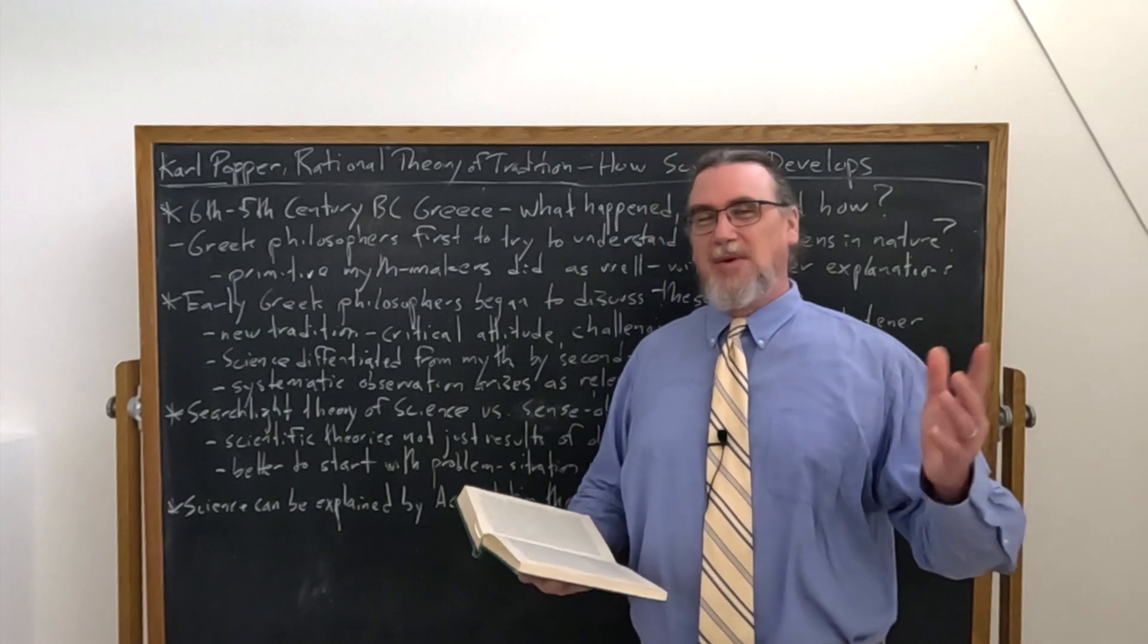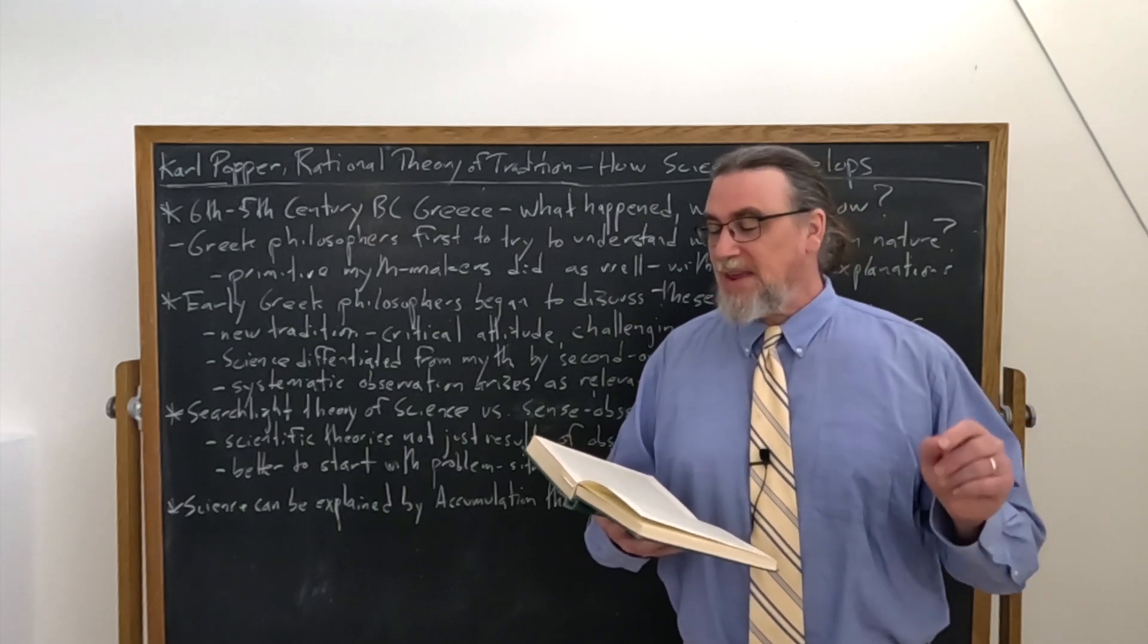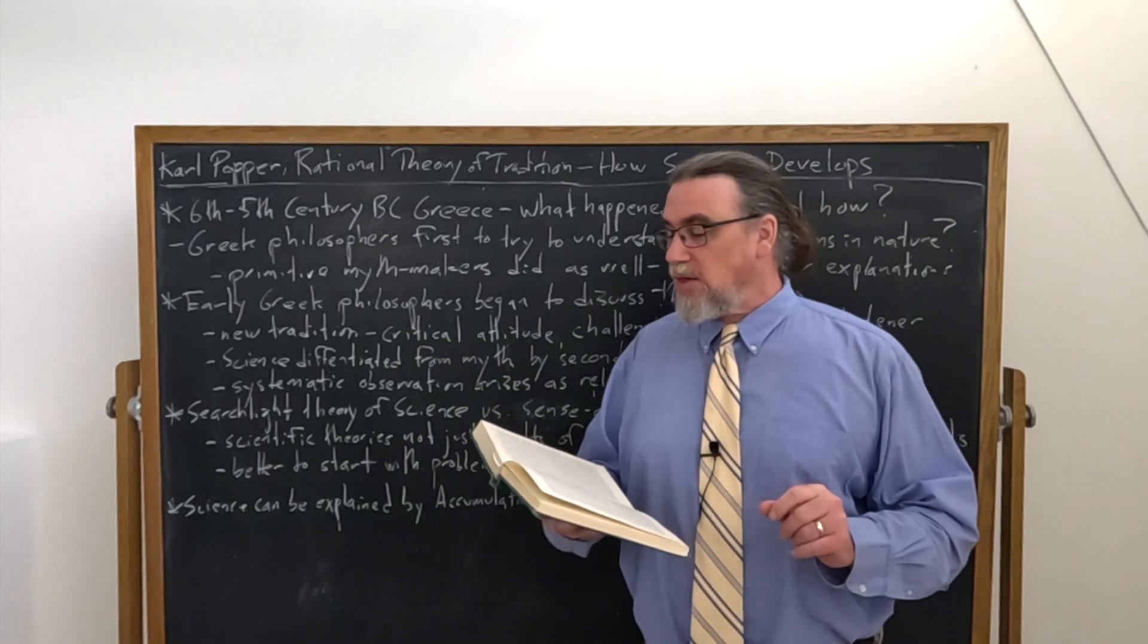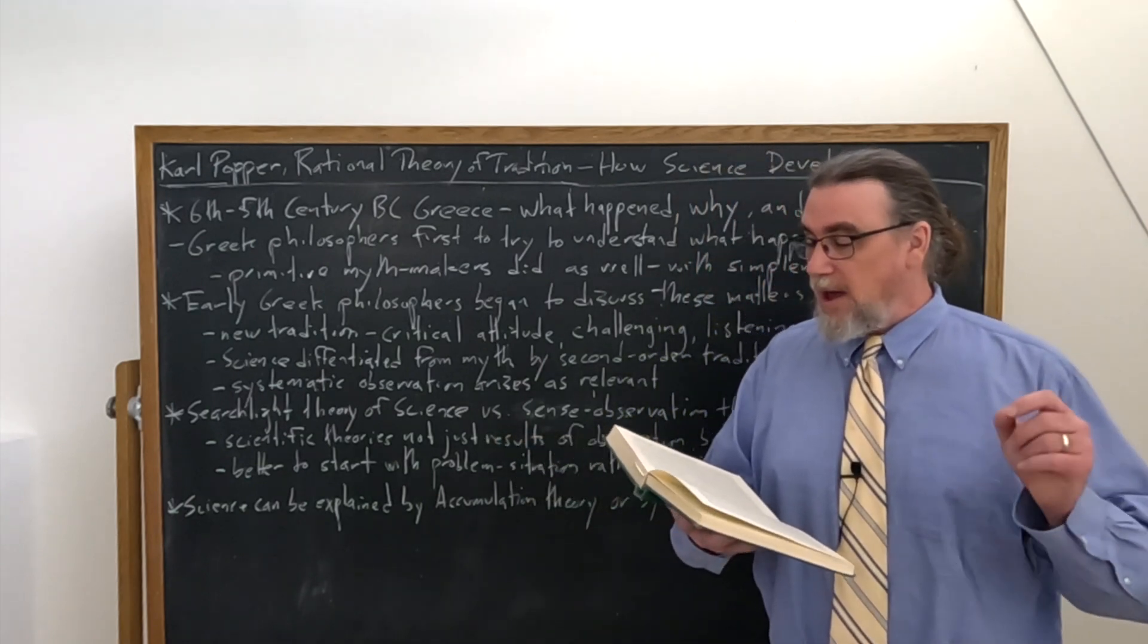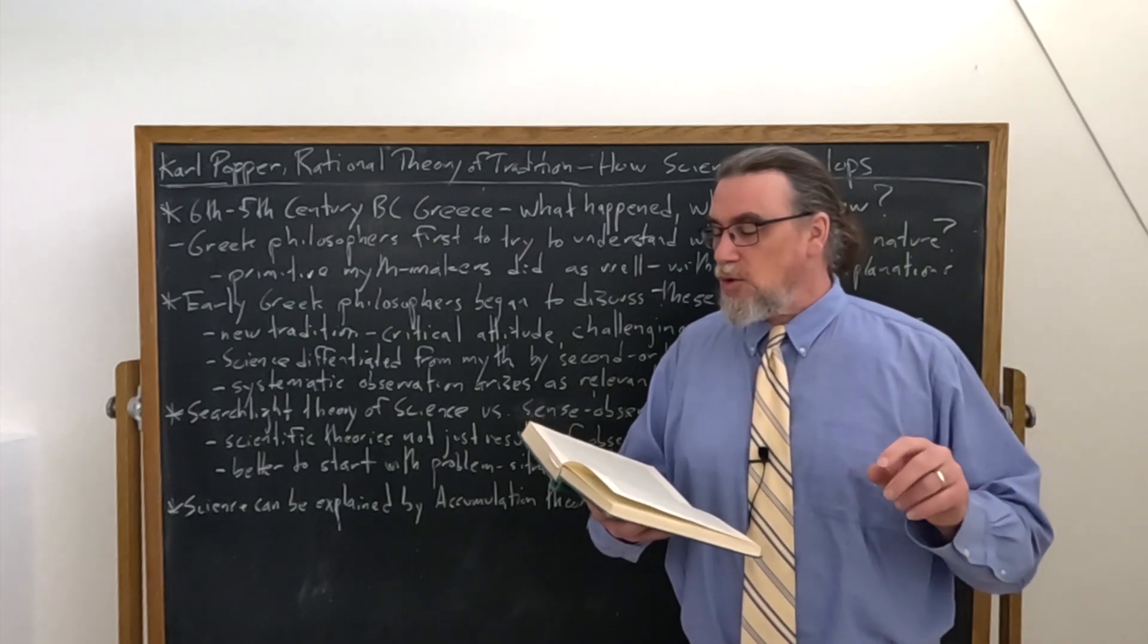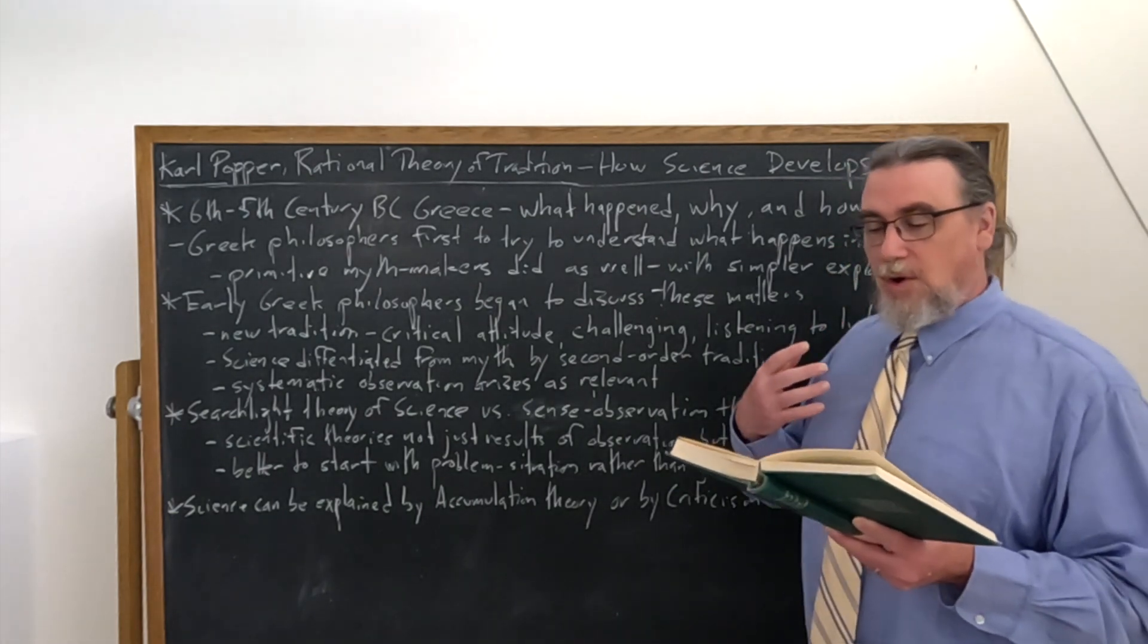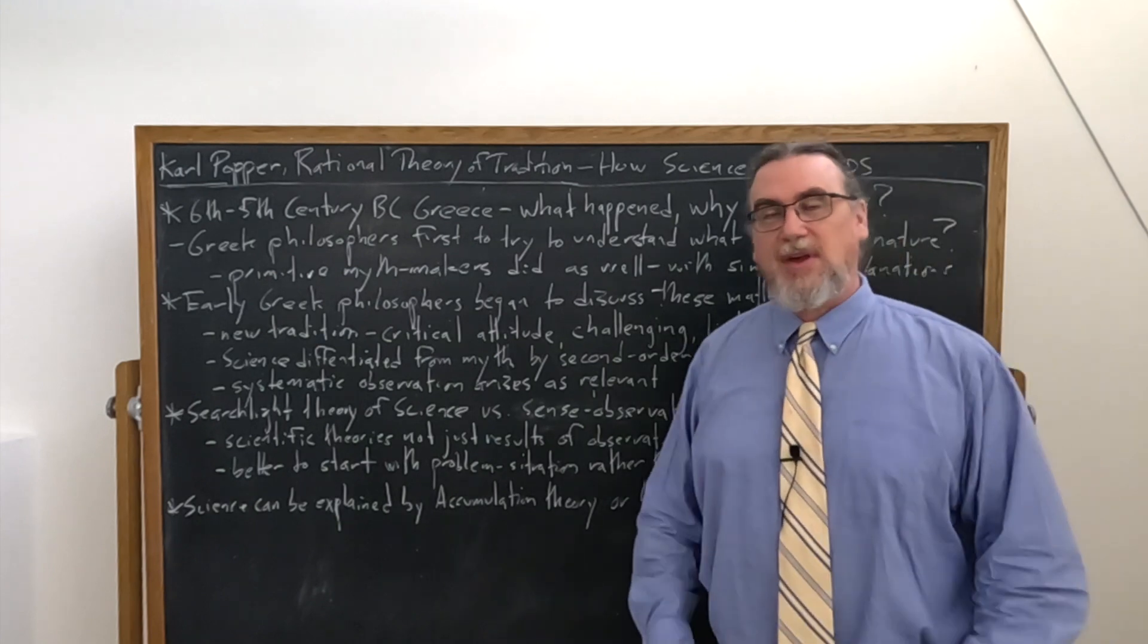Popper's going to say something really interesting here. My thesis is that what we call science is differentiated from the older myths, not by being something distinct from a myth, but by being accompanied by a second order tradition, that of critically discussing the myth. Before there was only first order tradition, now there's a story to be handed on, but something new, a silent accompanying text of a second order character, in quotes, I hand it on to you, but tell me what you think of it. Think it over. Perhaps you can give me a different story. The second order tradition was the critical or argumentative attitude. This is a new thing, and it is still the fundamentally important thing about scientific tradition.